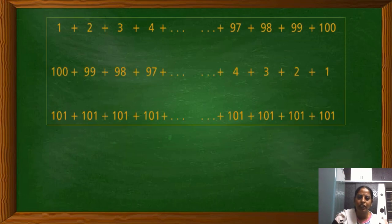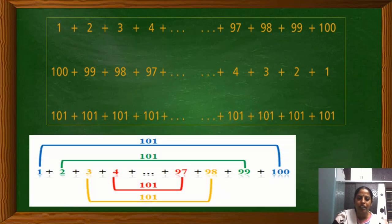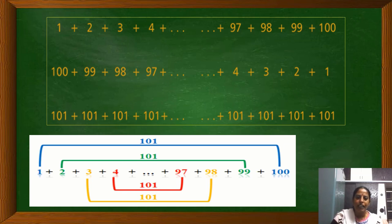So Gauss started explaining how he calculated the sum from 1 to 100. We have 100 numbers. If we start adding 1 to 100, we get 101. If we add 2 to 99, again we get 101. If we add 3 to 98, 101. 4 to 97, 101. So if we go on adding like this, we will get 101 fifty times. If we multiply 101 by 50, we get the answer instead of adding 101 fifty times.